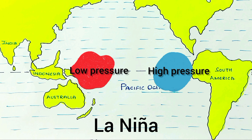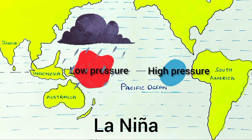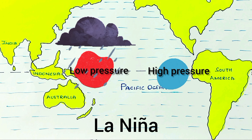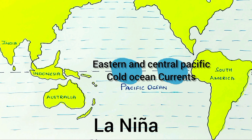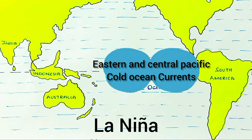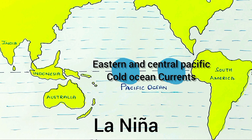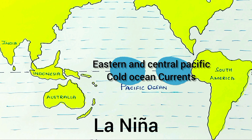Hence, due to La Niña, the western parts get more rain. La Niña is a phenomenon that describes cooler than normal ocean surface temperatures in the eastern and central Pacific Oceans.